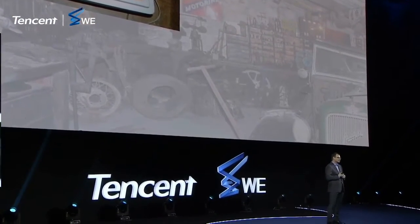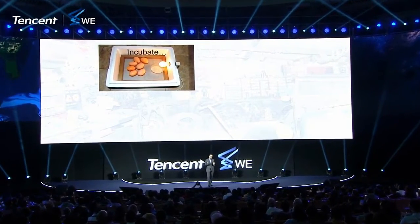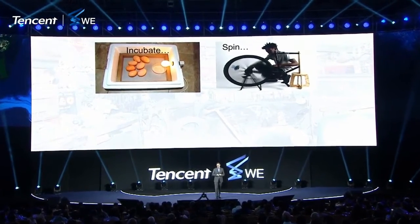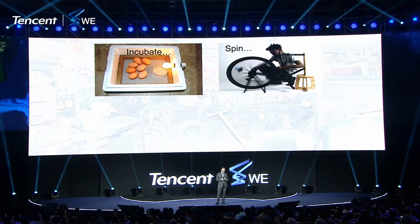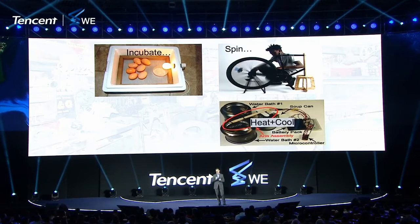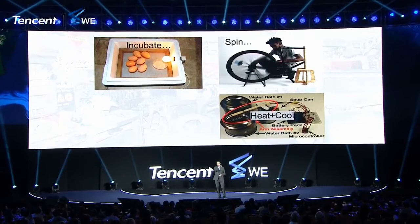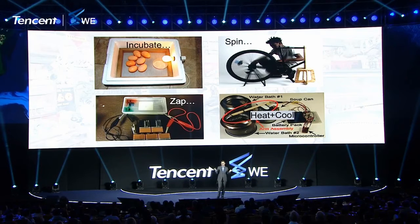I think we can. So this is an incubator: a styrofoam box and a light bulb. It will give you a reasonably stable temperature — you can hatch your eggs, this will work. If you want to build a centrifuge, there are so many things that spin: you can use a bicycle wheel, you can use a fidget spinner. Many tools spin fast enough to separate samples in a meaningful way. Similarly, if you need controlled heating and cooling, why not take a bunch of water baths and dip your sample iteratively through them? This is actually how the PCR device was invented in the first place. If you want to zap, you could just take a lunchbox and batteries — it works just the same.